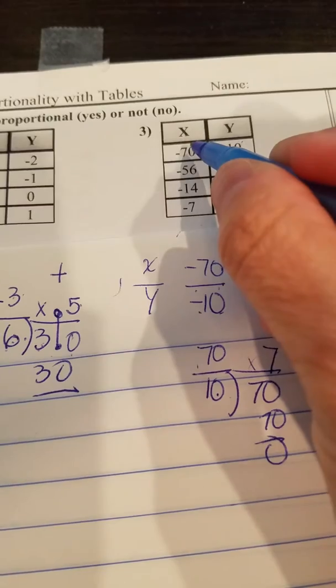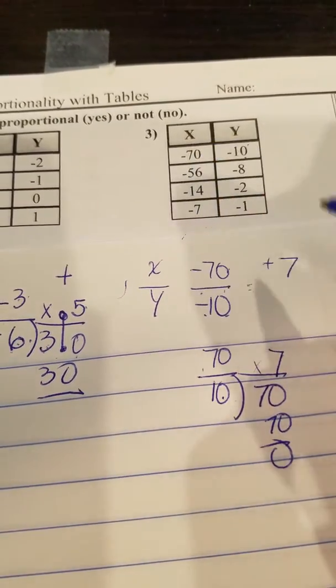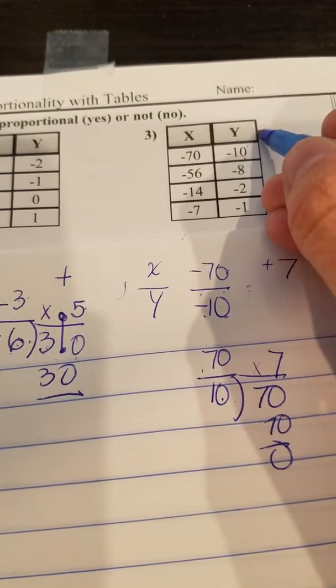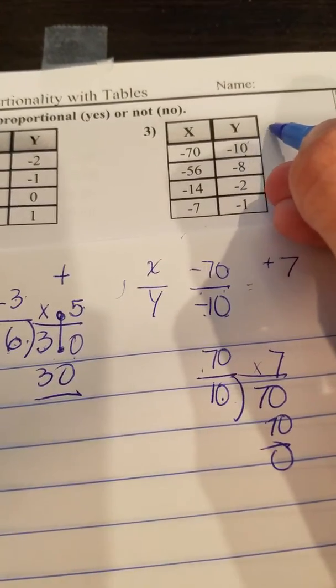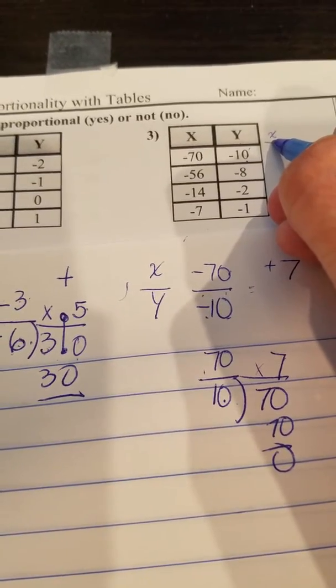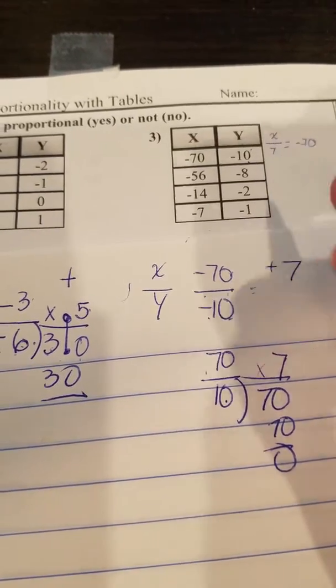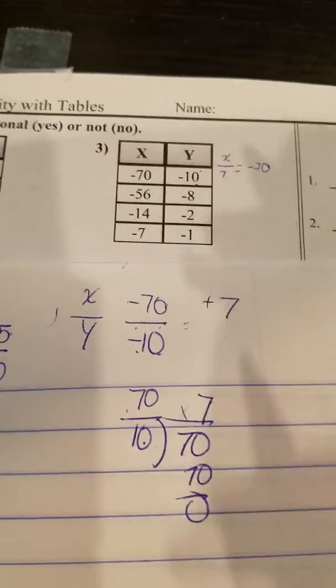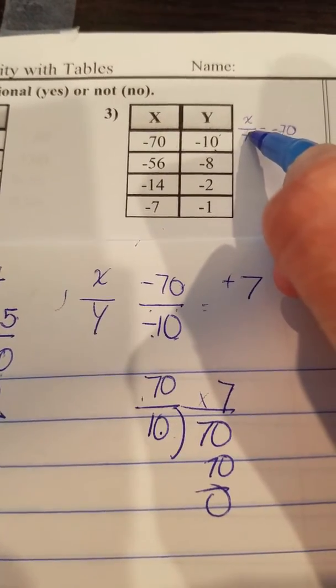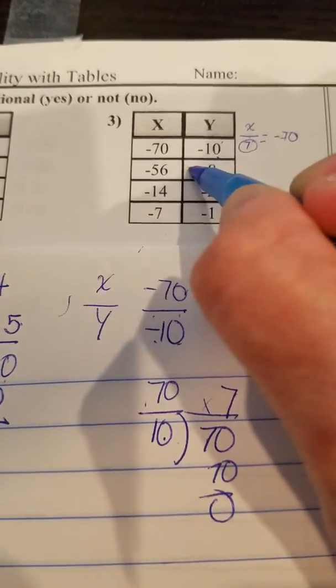So X, in this case, is going to be divided. X divided by 7 is going to be Y, or actually this should be X divided by 7 equals negative 70. I just kind of want you to see how I write an equation. But anyway, so my answer is going to be 7, right?